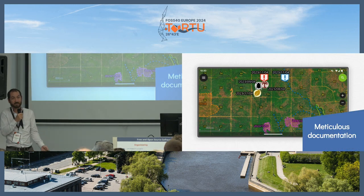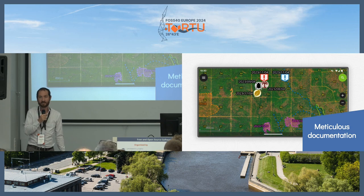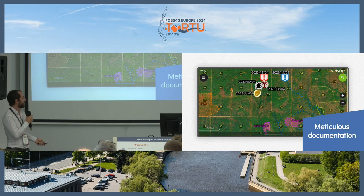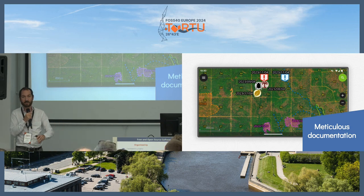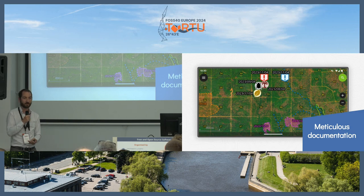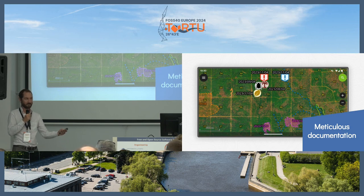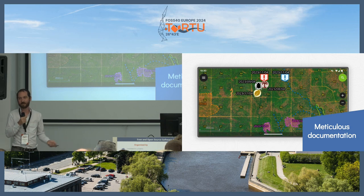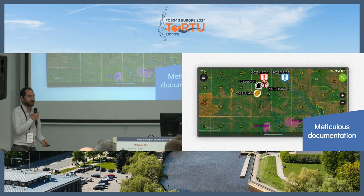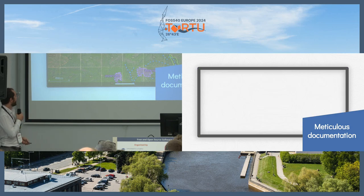One thing that is very, very important in this case is that you actually have meticulous documentation about what's going on — that you actually know what happens where, and that you have a precise understanding of the current situation. Because eventually this also means that you may have to cut down some trees in some spaces, and if you choose the wrong spaces you cut down trees but didn't even solve the problem. So it's really important that you have a precise understanding of the situation you are faced with.